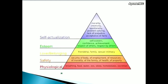In Maslow's hierarchy, physiological needs are the basic needs — that is breathing, food, water, sex, sleep, homeostasis, and excretion. Safety is the second priority. Love and belonging is the third priority, including friendship, family, and sexual intimacy. Then self-esteem: confidence, achievement, and respect of others.